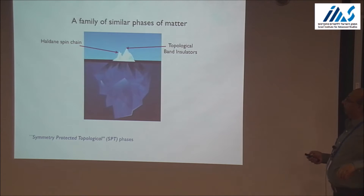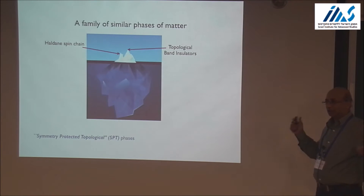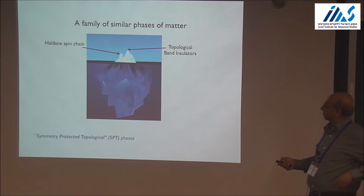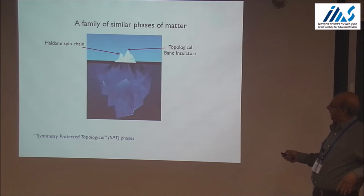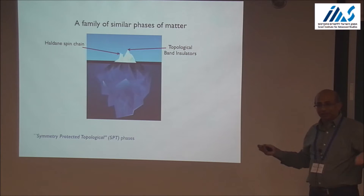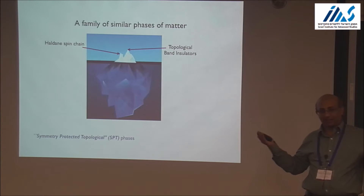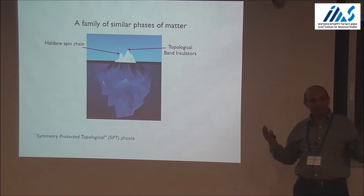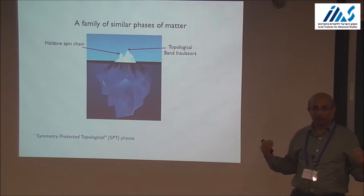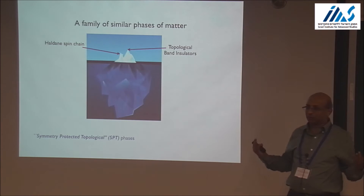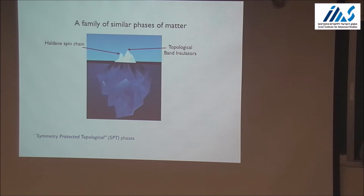The landscape is that there is the Haldane spin chain, which is trivial in the bulk but has non-trivial boundary modes protected by symmetry. The other examples are topological band insulators, which are also trivial in the bulk but have non-trivial edge states protected by symmetry. The question is: is that all, or is this just the tip of something much bigger? The importance of the Haldane chain is that it tells you this kind of phenomenon is not confined to free fermion systems — it happens much more generally in strongly interacting many-body systems.